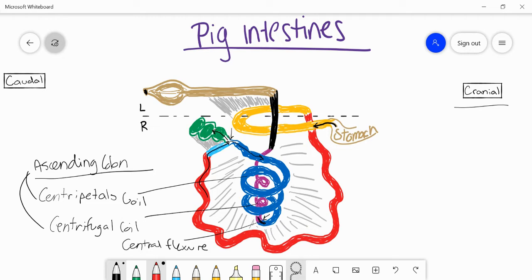So here we have the central flexure. Food is going to go back up the centrifugal root as it makes its way.